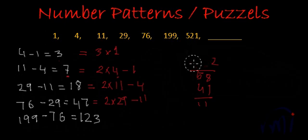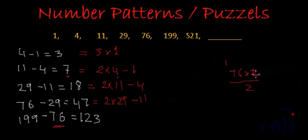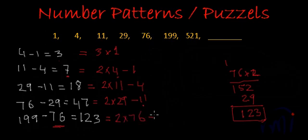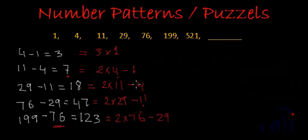What about this 123? Here we have 76, so 2 times 76 is 152. If we subtract 29 from 152, we get 123. So this can be written as 2 times 76 minus 29.